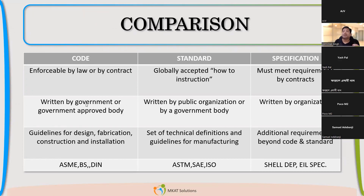Codes are governed bodies — nobody can just come out and make codes, they are actually governed bodies. Standards are also written by public organizations or government organizations, but there will be controlling on that because it has to be a worldwide organization. Otherwise, if you are making a standard which is very local, it will not have much significance.